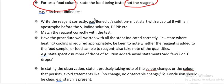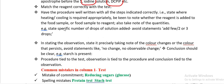Iodine solution should be written correctly. DCPIP should be in capital letters with no abbreviation dots and no mixing of capital and small letters. Match the reagent correctly with the test — for starch you use iodine solution; using Benedict's solution will give wrong results. Have the procedure well written with all steps indicated: state whether heating or cooling is required, and note whether the reagent is added to the food sample or vice versa.